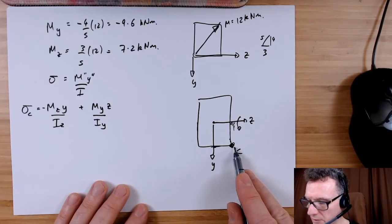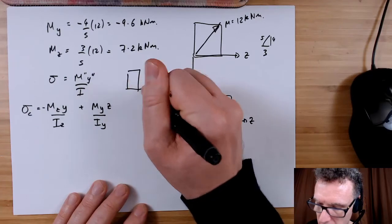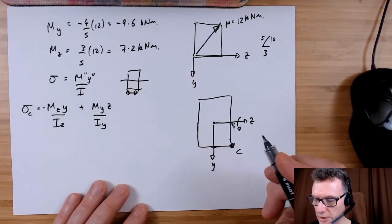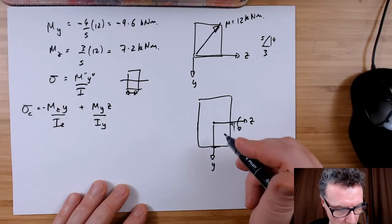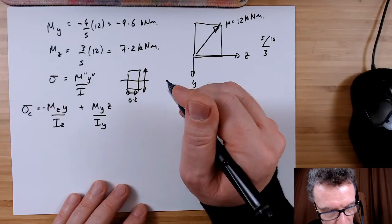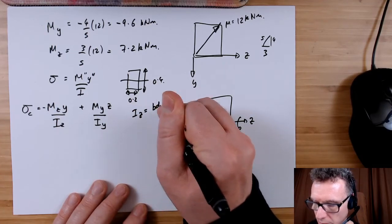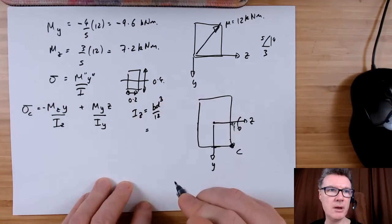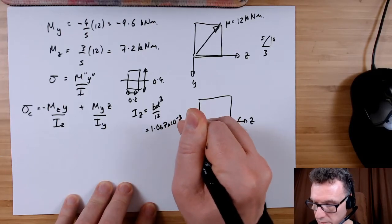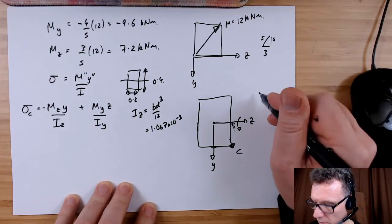I need to work out what IZ is. IZ is when I cut it this way, so the breadth is going to be 0.2 and the depth will be 0.4 for IZ. When we stick that into the formula, I will end up with 1.067 times 10 to the minus 3.